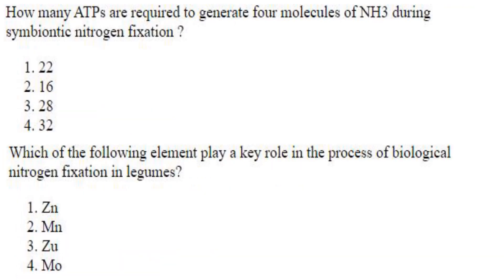How many HEPs are required to generate 4 molecules of ammonia during symbiotic nitrogen fixation? For producing 1 molecule of ammonia, 8 HEPs are needed. So for 4 molecules of ammonia, you need 32 HEPs. Answer is option 4.